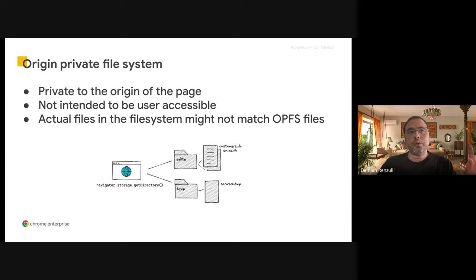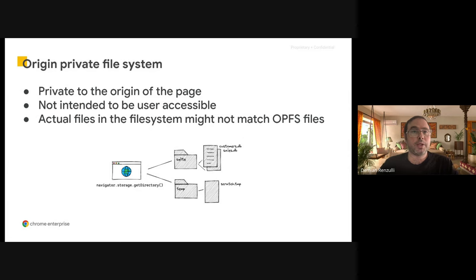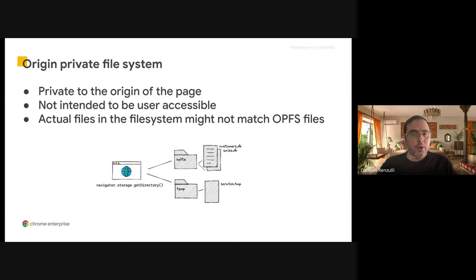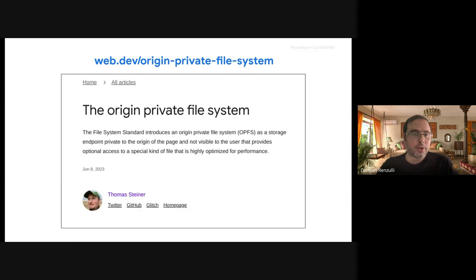In the Origin Private File System, this is different. You have a private file system to the origin of your site that only your site is going to see and be able to manipulate. There is not a one-to-one mapping between the files you use in your application and the actual files stored in the file system. Because it doesn't matter — you only need a virtual file system. Your application can manipulate files as usual, but users don't need to see these files. Some browsers might use a database to store these files internally. If you want to know more about the Origin Private File System, please check out the linked article.